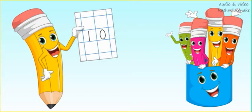Numbers 1 to 9 are single digit numbers. Number 10 is a two digit number. You will write in the middle of the box. Do not touch the side of the box. For two digit numbers, you will write one number in one box.